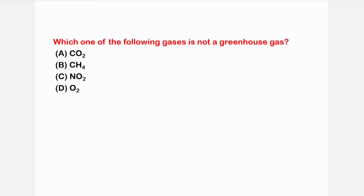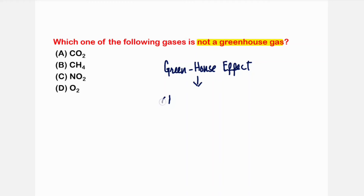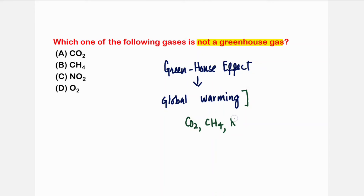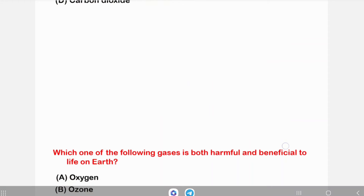The next question: which of the following is not a greenhouse gas? Greenhouse gases are those responsible for the greenhouse effect, which in turn causes global warming. The greenhouse gases include carbon dioxide, methane, nitrogen dioxide, chlorofluorocarbons, and water vapor. However, oxygen is not a greenhouse gas — that is the correct answer.